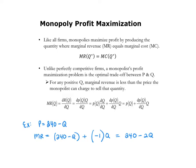Observe here that the slope of marginal revenue is double the slope of the demand. Specifically here, dMR/dQ is minus 2, whereas dP/dQ was minus 1. Whenever demand is linear, the slope of marginal revenue will be double the slope of demand.